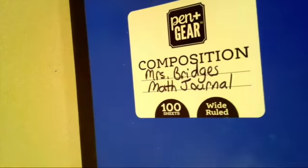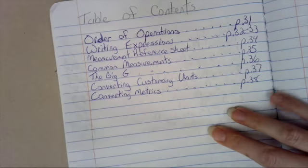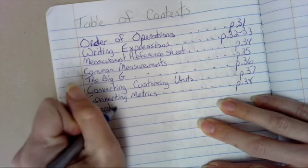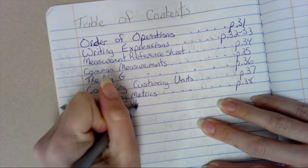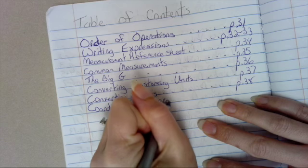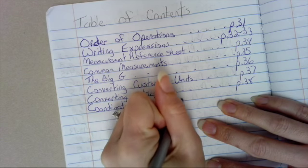In our math journal today, you're going to turn to the table of contents. You're going to write coordinate plane. If you want to put graphing in parentheses, that's what that is. The coordinate plane is what you graph on.